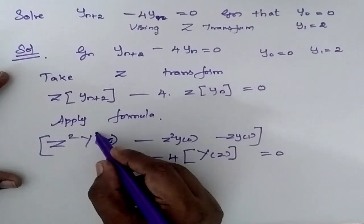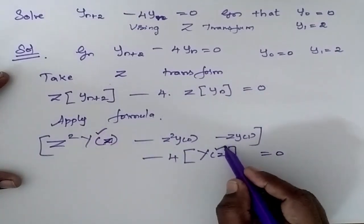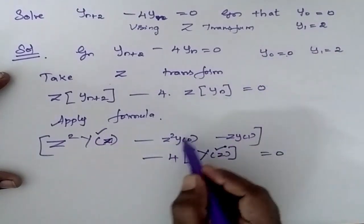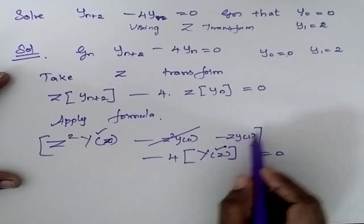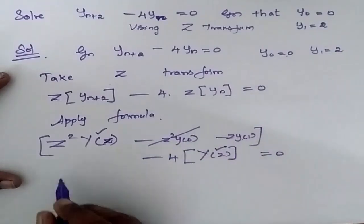Now I am going to combine y of Z terms together. My y of 0 is 0 so this will become 0 and y of 1 is 2 so I am going to substitute 2 here.